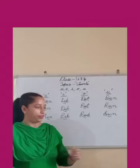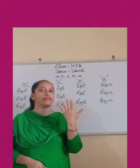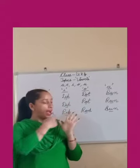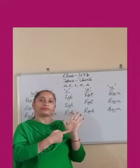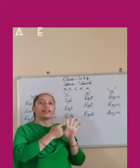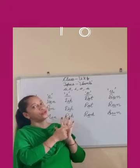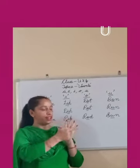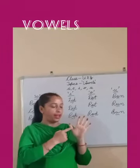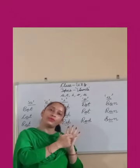Now look at here. These are my 5 fingers. I have named them: A, E, I, O, U. These are vowels. A, E, I, O, U.